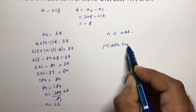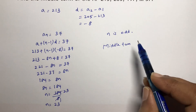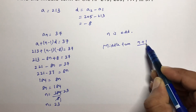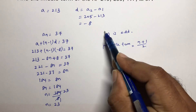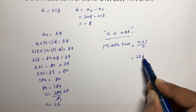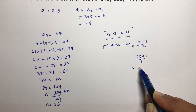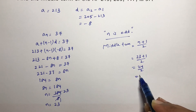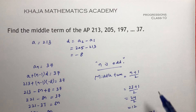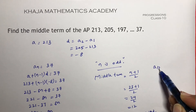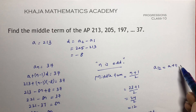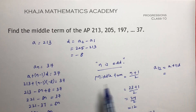In statistics also we discuss finding the median — if the number of observations is odd, the same formula applies: (n plus 1) divided by 2. Here, (23 plus 1) divided by 2 is 24 divided by 2, which is 12. So the middle term is the 12th term, and a₁₂ equals a plus 11d.